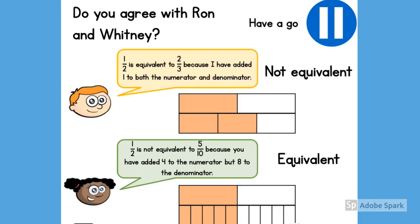Here we can see that they have used bar models to compare their fractions. Ron has drawn one-half and two-thirds and we can clearly see that it is not equivalent. So Ron is incorrect. Whitney has drawn two bar models. One cut into half and one cut into tenths. We can clearly see that one-half is equivalent to five-tenths. But she was wrong because she said it wasn't.